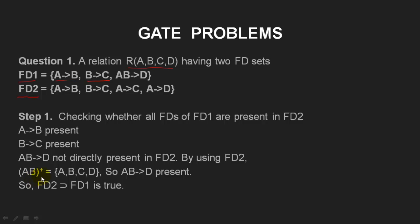The closure of AB will be {A, B}. B can determine C, so C is added. A can determine D, so D is added. Using FD2, we can determine that AB is determining D. That means AB→D is also derivable from FD2, which means FD2 is a superset of FD1.